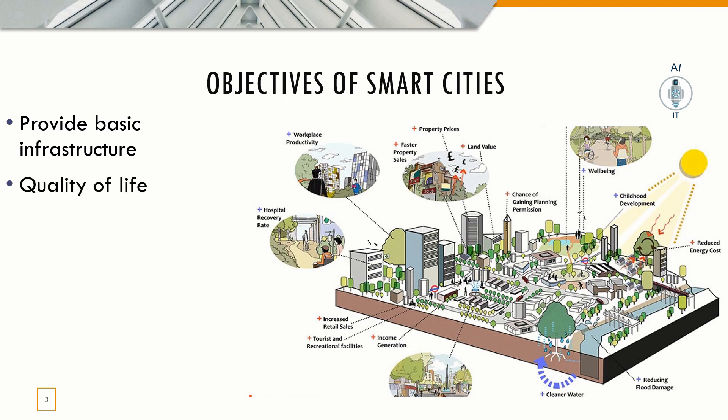All these will automatically lead to improvements in our quality of life, which is the second objective. The third objective is a clean and sustainable environment where there is no pollution, and the air, water, and energy are clean — basically, a healthy and safe environment in which greenery is maintained and natural resources are made available for future generations.